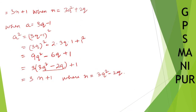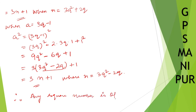I have represented all cases in the form 3n or 3n plus 1. Therefore I can conclude that any square number is of the form 3n or 3n plus 1. Thank you so much, we'll meet in the next video.